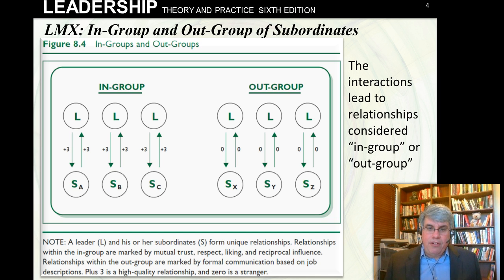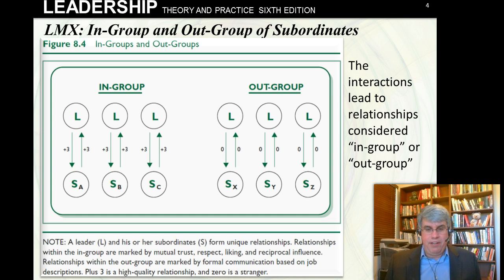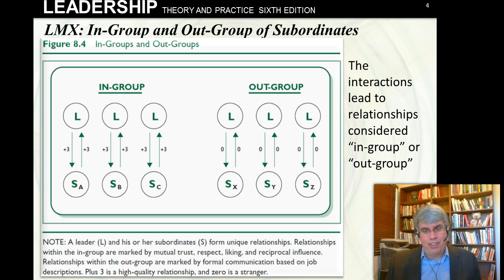However, there are other subordinates that things don't go as well with — subordinates X, Y, and Z. The leader and the subordinate in this case have just kind of neutral interactions. The leader does what he or she has to do, and the subordinate responds with what he or she has to do. There's no real mutual benefit going on; things are defined by the contract that exists between them, and here we've got zeros as their kind of neutral interactions. Sometimes there are even negative interactions — when the leader interacts with the subordinate, the subordinate says, oh no, not again, I want to avoid them — or the same thing when the subordinate acts with the leader, the leader might say, I'd rather avoid them too.